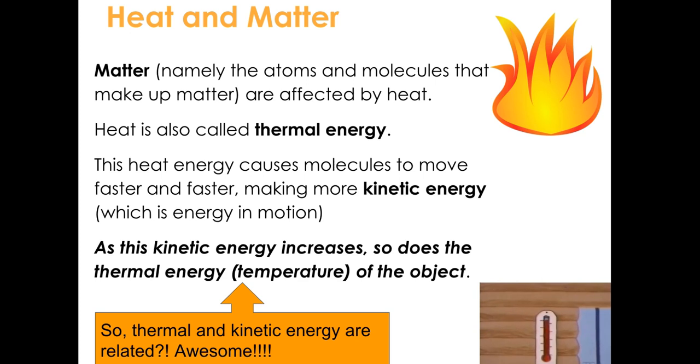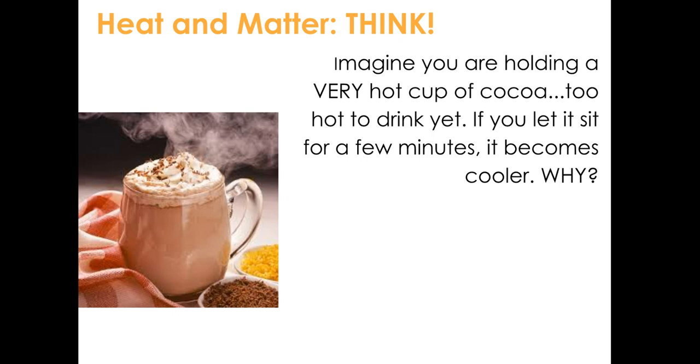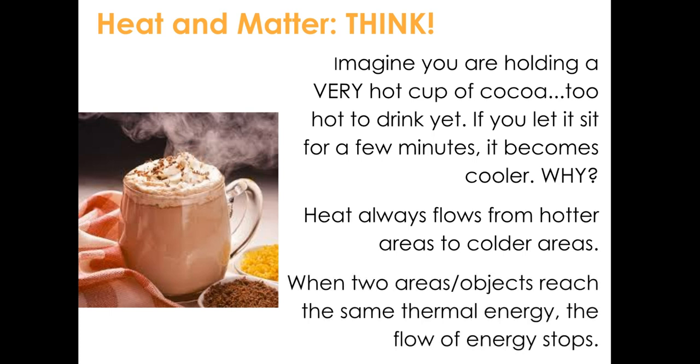Hot cocoa, tis the season. Imagine you're holding a very hot cup of cocoa, but it's too hot to drink yet. You let it sit for a few minutes. It gets cooler. Well, why does it become cooler? It's because heat always flows from hotter areas to colder areas. When two objects reach the same thermal energy, the flow of energy stops. Do you see that steam coming off of the hot cocoa? That's the heat energy flowing from a hotter area to a colder area. It's cooler outside of the hot cocoa and the energy is escaping.